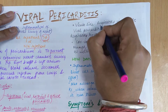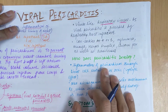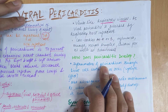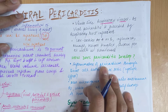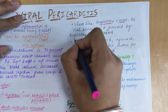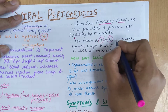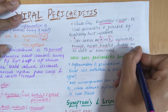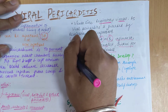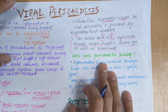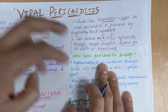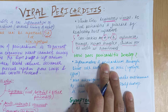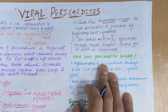Viral pericarditis is preceded by respiratory tract infections. The most common causative viruses are Coxsackie virus A and B, influenza virus, mumps virus, herpes simplex virus, chickenpox virus, and echovirus. Patients suffering from these infections can develop viral pericarditis as a complication approximately three to four weeks later.